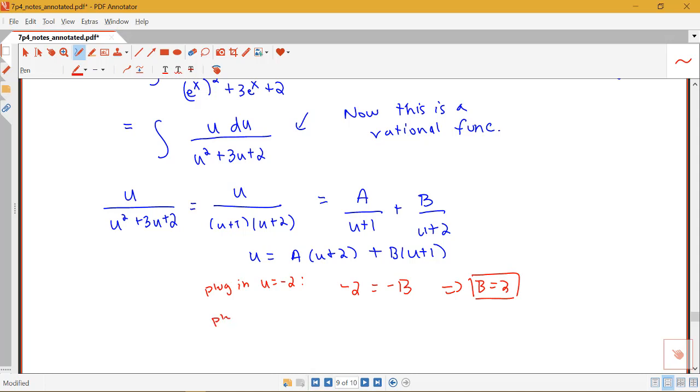And then if I plug in another convenient value here like u equals negative 1, I'm going to have negative 1 equals a times negative 1 plus 2. So that's just going to be a and plus 0 for the other term. So I see a is equal to negative 1.